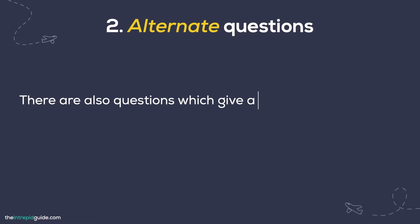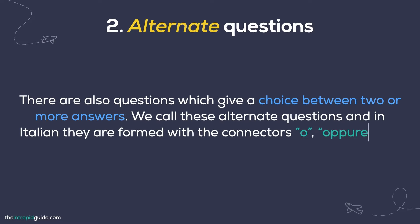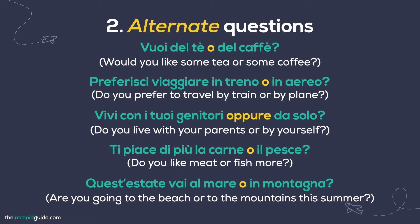There are also questions which give a choice between two or more answers. We call these alternate questions, and in Italian they are formed with connectors such as o or oppure. Remember that in Italian we don't need to change the order of the sentence to ask the question or put the auxiliary at the beginning like in English where we say do, does, are, or is. Examples: Vuoi del tè o del caffè? Would you like some tea or some coffee? Preferisci viaggiare in treno o in aereo? Do you prefer to travel by train or by plane? Vivi con i tuoi genitori oppure da solo? Do you live with your parents or by yourself? Ti piace di più la carne o il pesce? Do you like meat or fish more? Quest'estate vai al mare o in montagna? Are you going to the beach or to the mountains this summer?